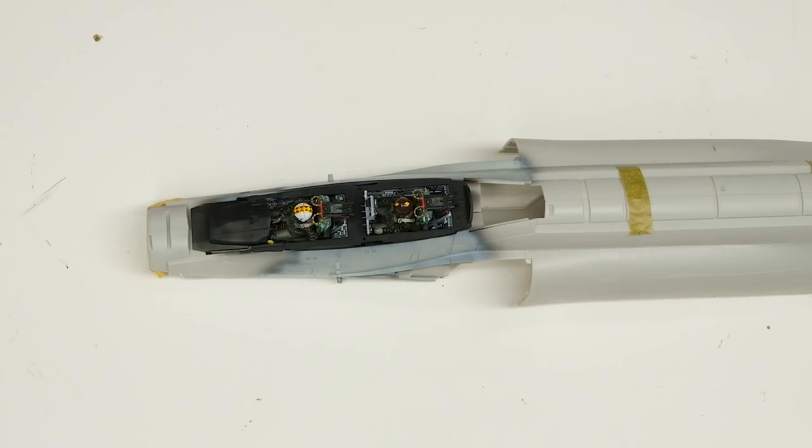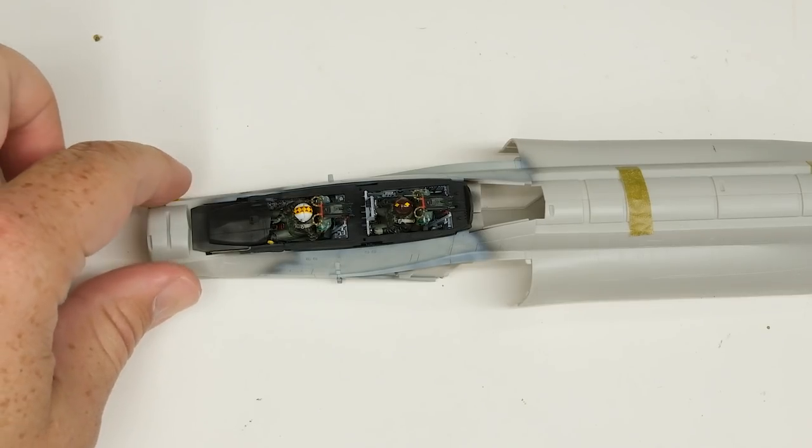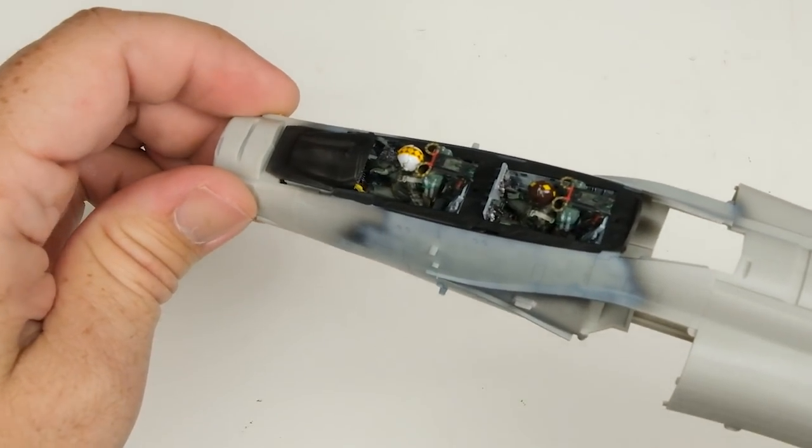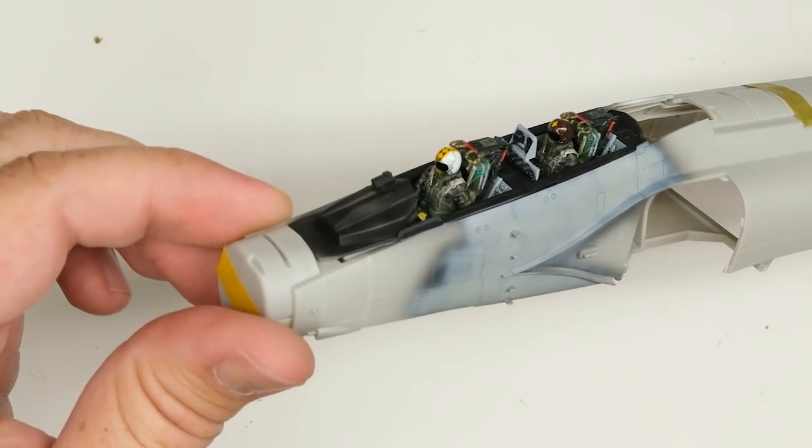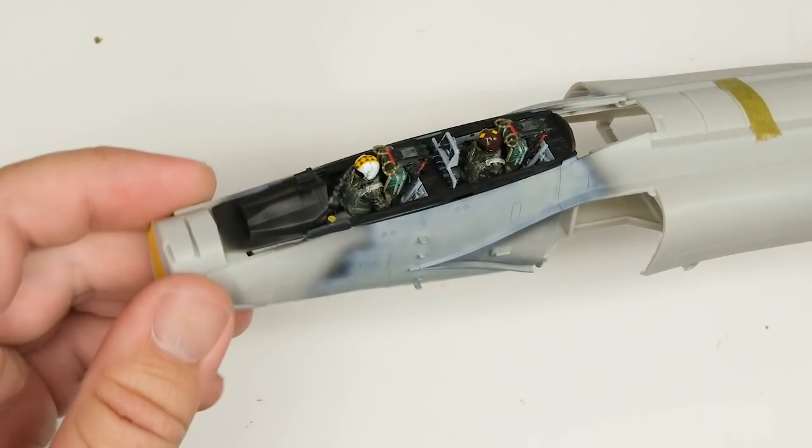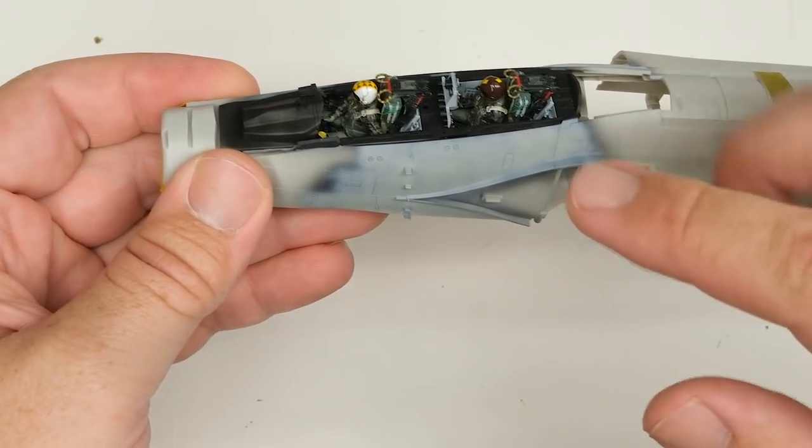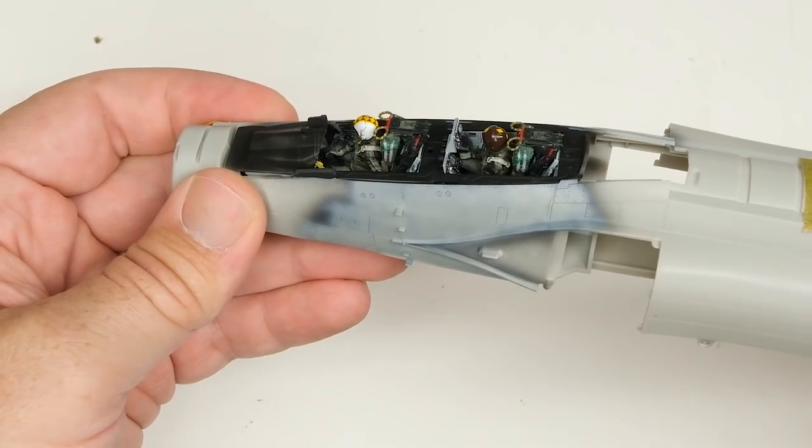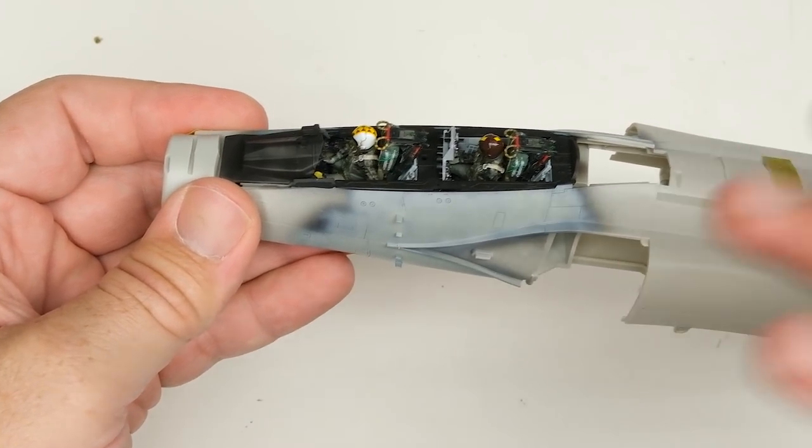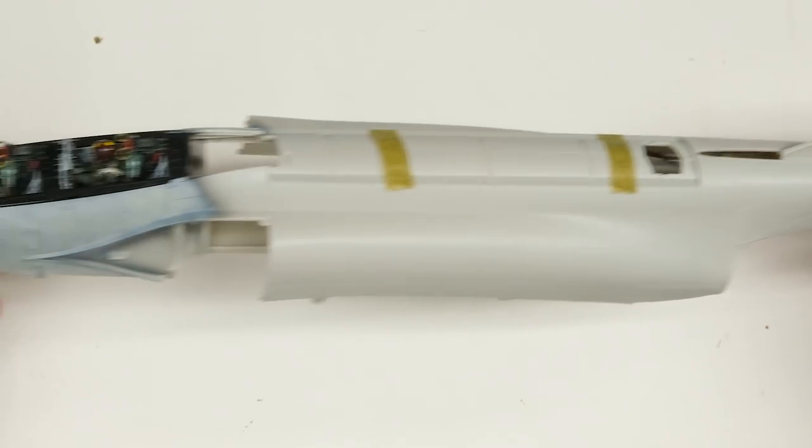Hey everyone, Matt here with Duke's Models, and welcome to Part 4 of the Tamiya F4B Phantom build. Part 3 was entirely focused in the cockpit, dealing with the Quinta decals, painting the pilots and seats, getting everything pretty much set. So everything pretty much below the level of this sill plate here is in a good place, and now it's time to move on to the rest of the airframe and basically get everything built.